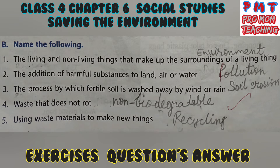Name the following. First, the living and non-living things that make up the surroundings of a living thing. Answer: environment. Second, the addition of harmful substances to land, air, or water. Answer: pollution. Third, the process by which fertile soil is washed away by wind or rain. Answer: soil erosion. Fourth, waste that does not rot. Answer: non-biodegradable. Fifth, using waste materials to make new things. Answer: recycling.